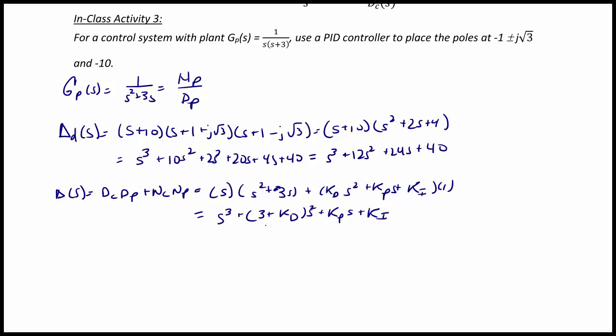So when we equate coefficients, we see that 3 plus kd must equal 12. So kd is equal to 9.